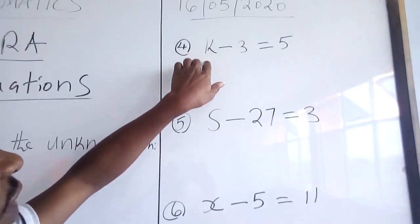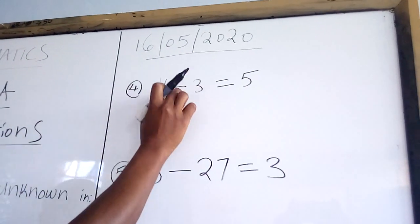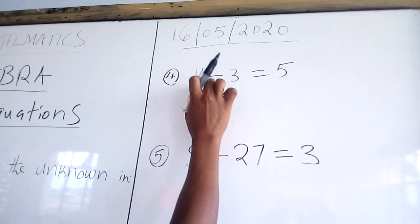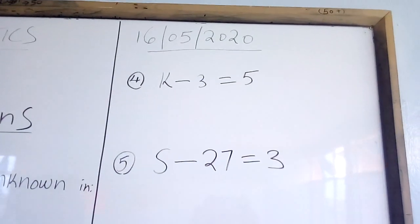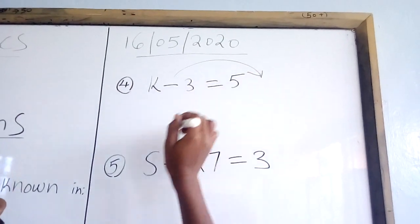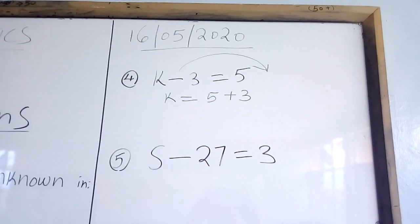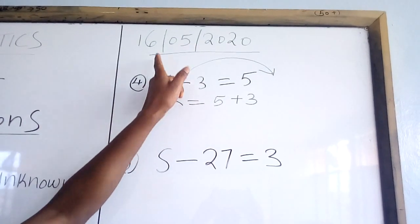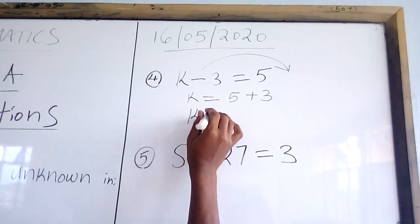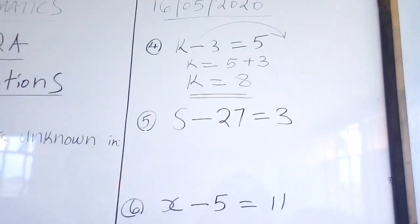Let us look at the fourth one. We have K minus 3 is equal to 5. This is a minus — a negative sign. The moment this sign crosses the equal sign — that is the most important thing we have to know — it becomes a positive sign, that means it becomes a plus. So we are going to take the 3 to the other side. Therefore, K is equal to 5 plus 3. Because it is a minus here, if it crosses the equal sign it becomes a plus. So 5 plus 3, we are going to have K equal to 8. Therefore, that is the final answer: K is equal to 8.